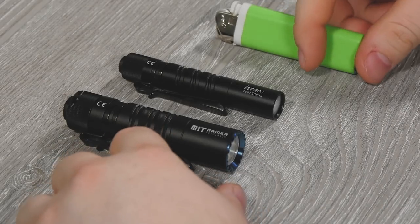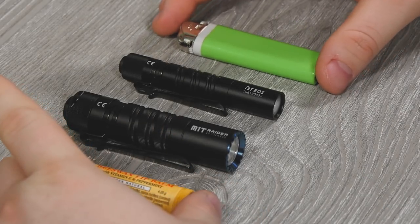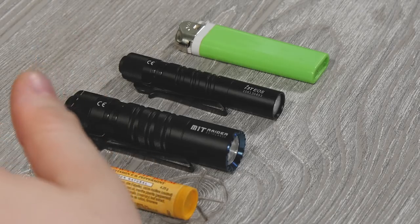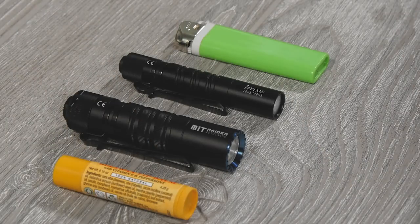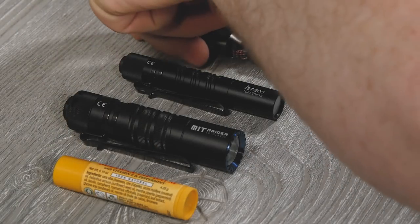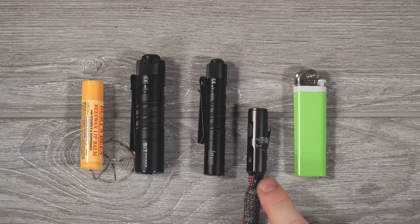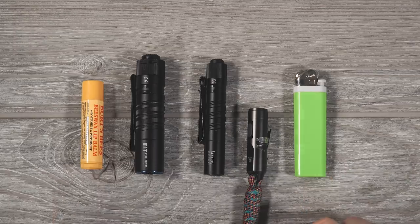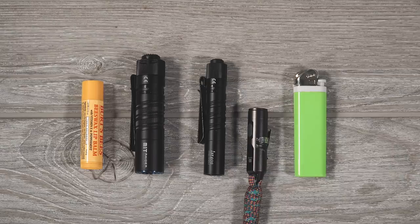Just really quick before we get too far into it, I want to give you some size comparisons with some pretty common objects and even the flashlight that I reviewed on the channel last week. Here's the Rovyvon Aurora A3, here is a lighter and some lip balm so you get kind of a feel for how small they are. Pretty small flashlights.